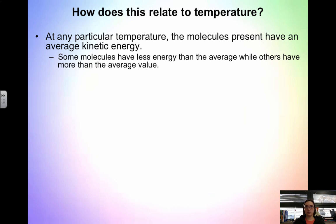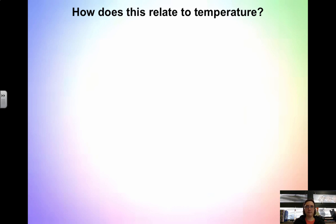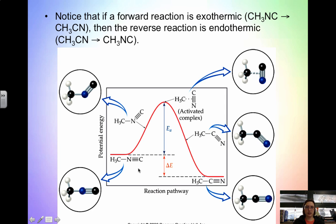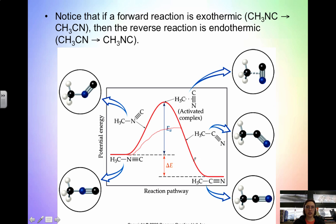How does this all relate to temperature? This energy diagram showed us an exothermic reaction, and the reverse would simply be endothermic. When we look at activation energy, the purpose of a catalyst is to increase the rate by lowering the activation energy. So the lower the activation energy, the faster the rate. At any temperature the molecules have an average kinetic energy, and temperature is simply a measure of that kinetic energy.